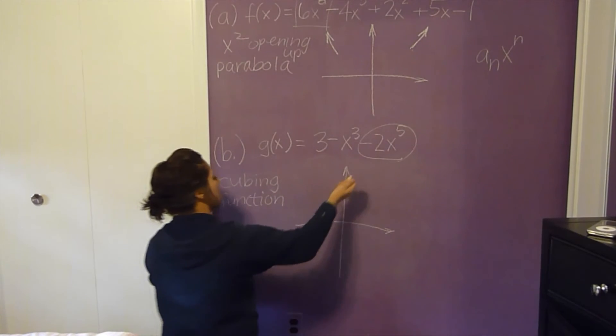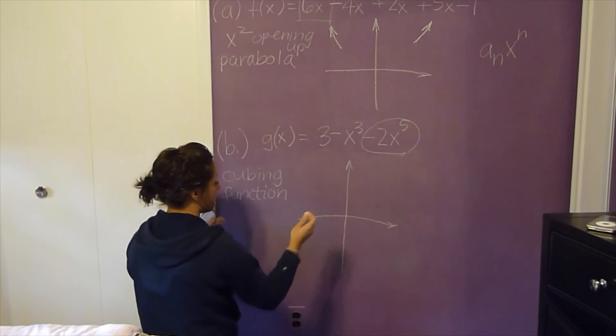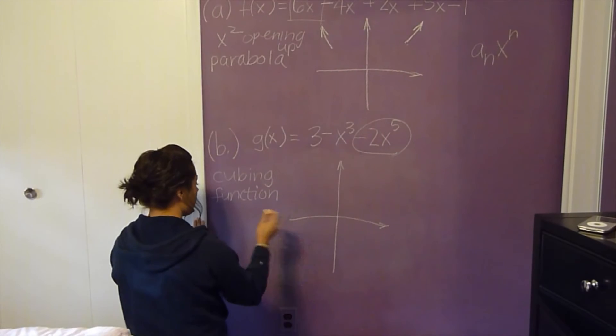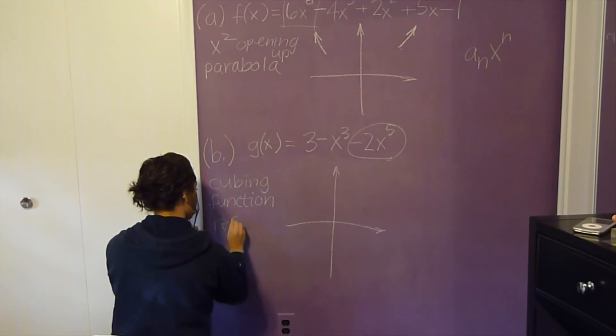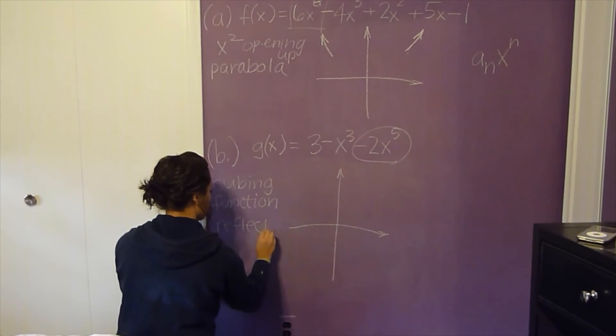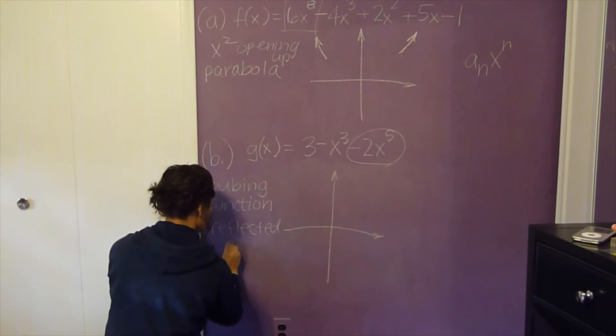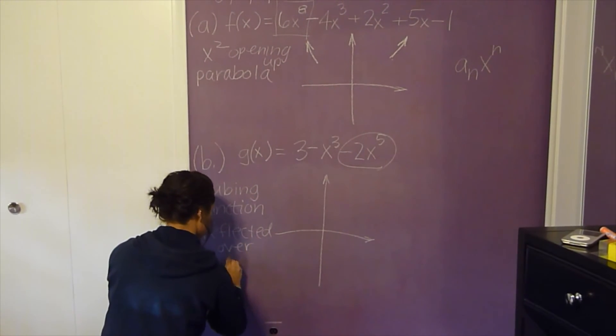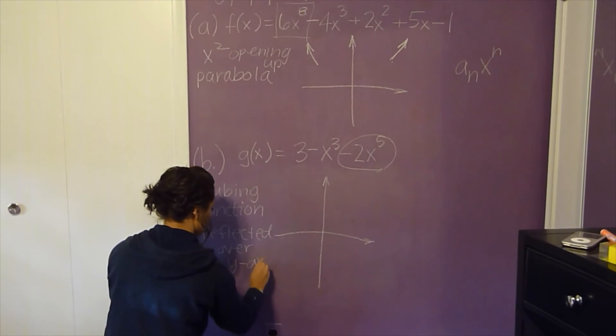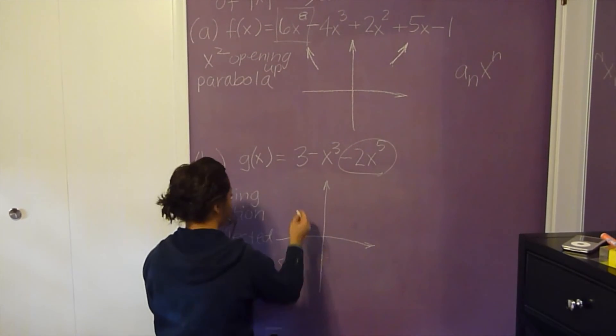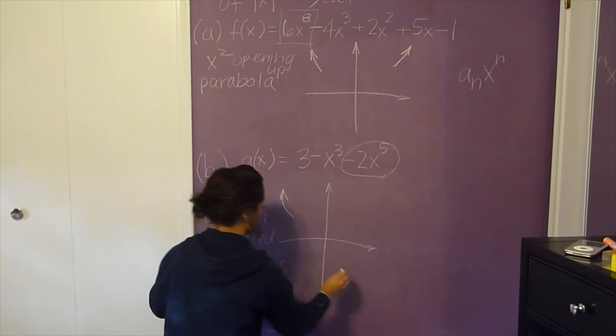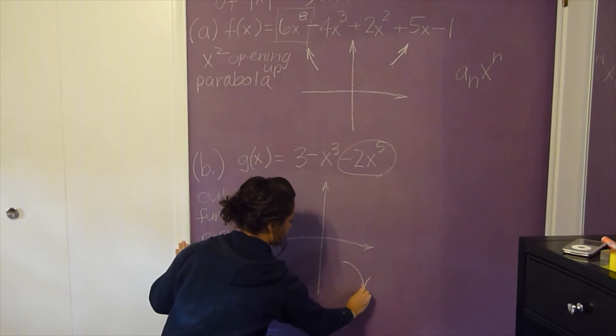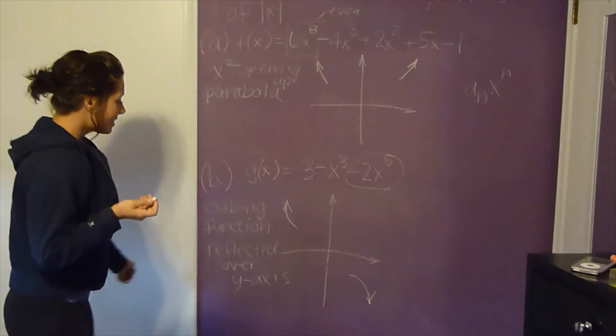And since the coefficient is -2, it's reflected over the y-axis. So it's going to look like this. And that's it.